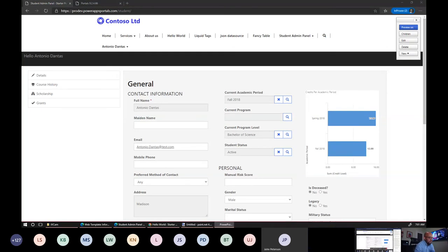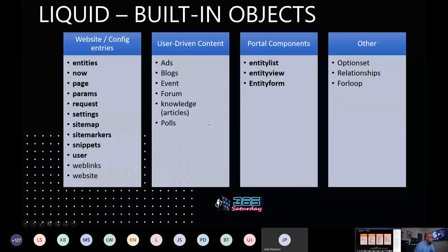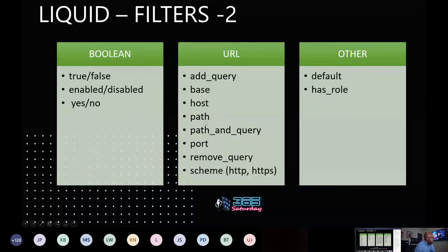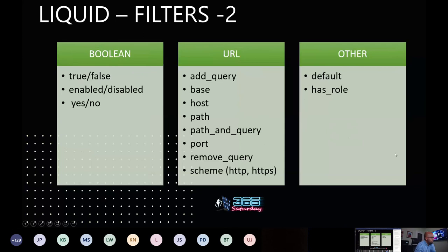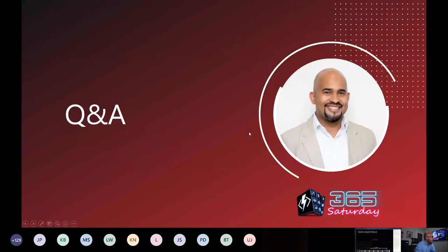Let me hop back to my presentation. I think we covered almost everything. There are some other functions here depending on the types you're using: add hours, minutes, months, and so on. Some math filters as well to facilitate calculation — there is no 'variable plus variable'; you have to use a filter to provide that functionality. Some filters for collections — we just saw batch, but there are many others. URL filters also — if you want to find a URL or create a parameter to your request.